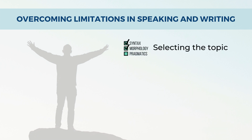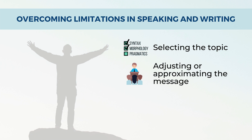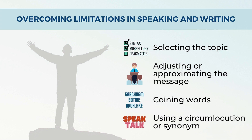Selecting the topic involves choosing the topic of conversation to direct the communication to one's own interests and ensure the topic is one in which the learner has sufficient vocabulary and grammar to converse. Adjusting or approximating the message entails altering the message by omitting some items of information, making ideas simpler or less precise, or saying something slightly different that means almost the same thing, such as saying pencil or pen. Coining words means making up new words to communicate the desired idea, such as 'chortle,' created by Lewis Carroll by blending chuckle and snort. And lastly, using a circumlocution or synonym — getting the meaning across by describing the concept (circumlocution) or using a word that means the same thing (synonym).